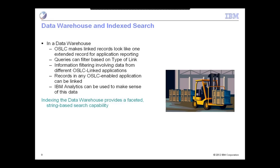The last piece of this is that, recognizing people's familiarity with string search capabilities, if we indexed the data warehouse we could provide a faceted string-based search on the data. We have technology at IBM called OmniFind, but it could be any kind of text search capability. By indexing that, we give our users the ability to self-serve on some of the requests that they have.